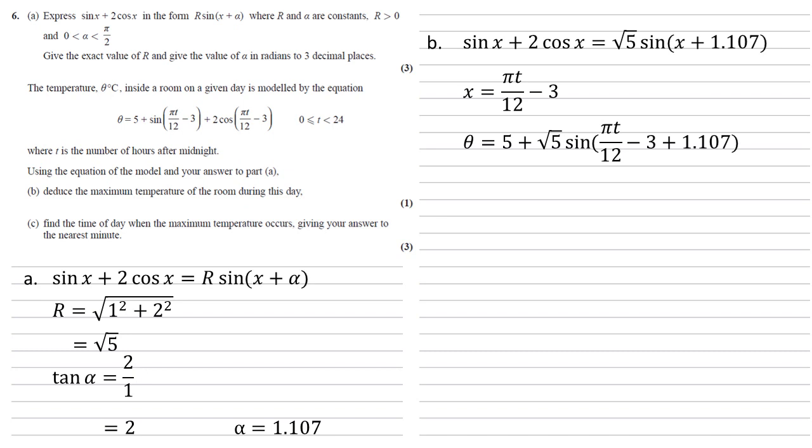Now we want the maximum temperature, the maximum theta. This is going to happen when we're adding as much as possible onto 5. The largest value that sin can take is 1, so our theta max is going to equal 5 plus root 5 times 1, which is 5 plus root 5, which is 7.24.